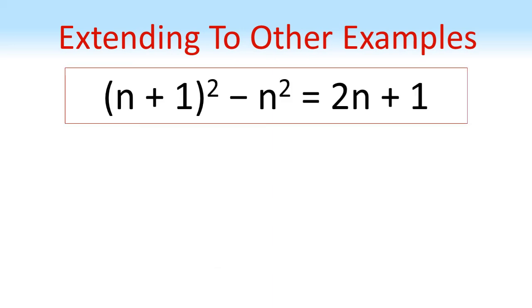Using our new formula, we can now quickly find some more answers. Suppose we want to do 30 squared minus 29 squared. They are consecutive numbers, so we can use our formula.